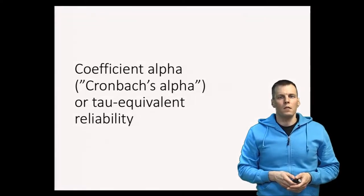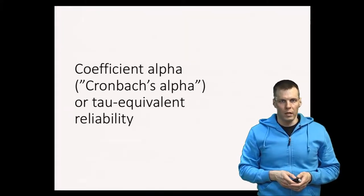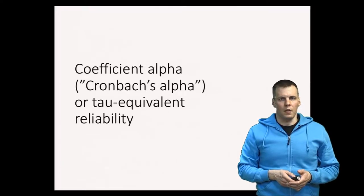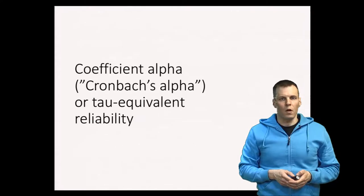Coefficient alpha, sometimes called Cronbach's alpha or tau equivalent reliability, is one of the most commonly used reliability indices in social science research. It may not be the best index for every scenario, but it is commonly used and therefore it is important to understand what it quantifies and under which assumptions it is a good reliability index.